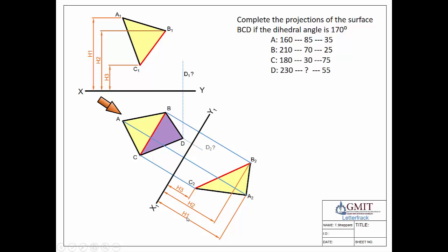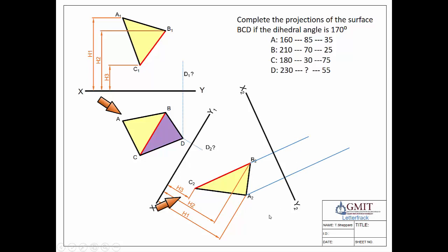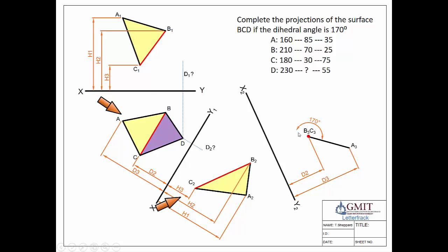Now we're able to look along that line of intersection and see it as a point view. We look parallel to it, with our X2Y2 line perpendicular to our line of sight, and project the points we have. Applying our 1-2 rule, we go back one view, two views to our plan view, using that XY line for distances to transfer into our auxiliary. This allows us to see a point view of our line of intersection and the surface A, B, C as an edge view — which is the view where we'd normally expect to see our dihedral angle marked in. We also expect to see surface C, D and B as a single edge.